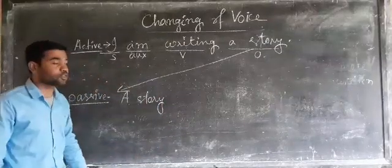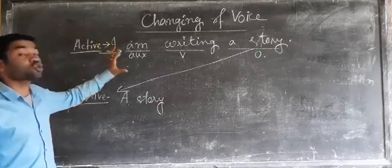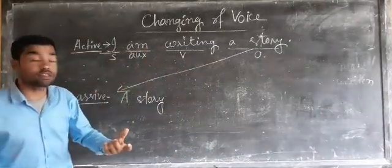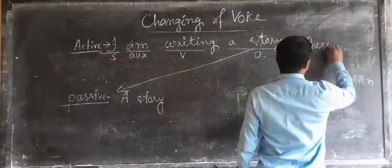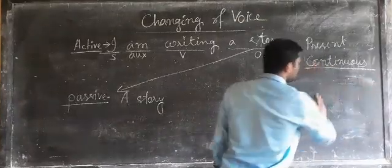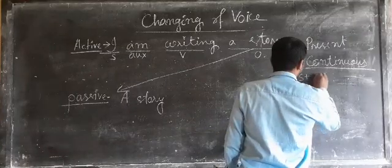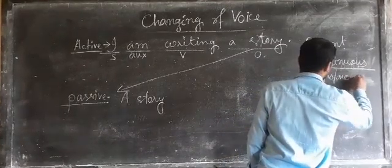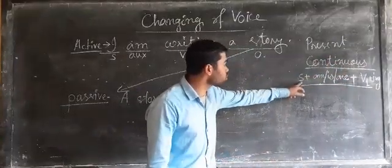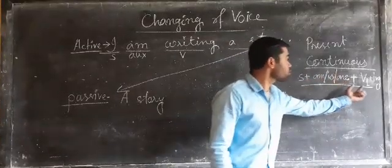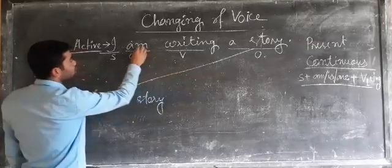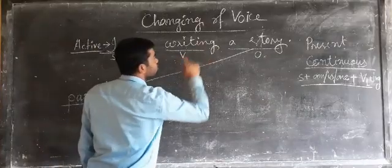'A story' is going to be the subject. Next, according to the tense of the sentence, we have to use the be-verb. The tense of 'I am writing a story' is present continuous. In present continuous tense, the structure is: Subject + am/is/are + first form of verb + ing. Here 'I' is subject, 'am' is used, and 'writing' is first form plus -ing. So it is present continuous. The tense should not change when we convert voice — passive must also be in present continuous.